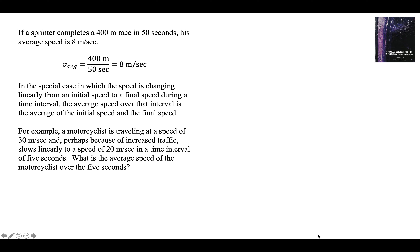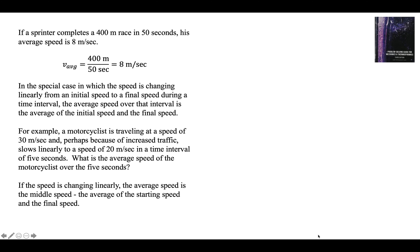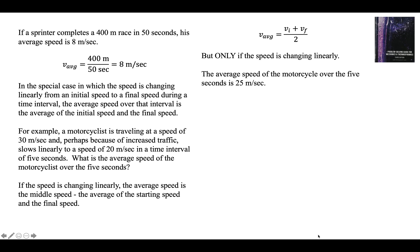For example, let's say a motorcyclist is going 30 meters per second initially, then hits some traffic and slows linearly to a speed of 20 meters per second in a time interval of 5 seconds. What's the average speed over the 5 seconds? Since the speed is changing linearly, the average speed is the middle speed — the average of the starting speed and the final speed. So V_average is V_initial plus V_final divided by 2. This is not really a physics equation; it's a math equation. The average of two numbers is if you add them up and divide by 2. In this case it's 25 meters per second — going from 30 to 20 linearly, the average speed is 25 meters every second.